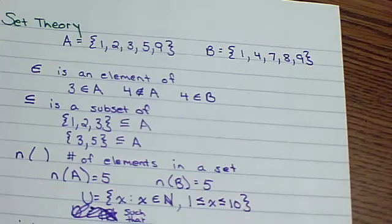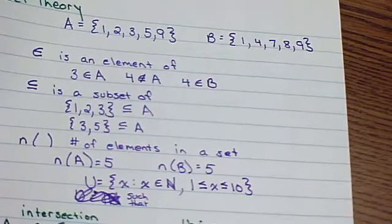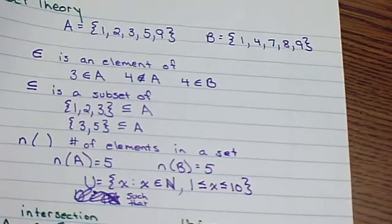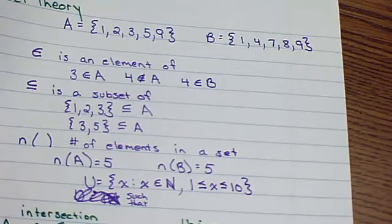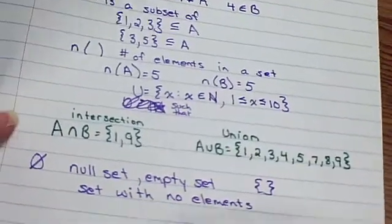That way, my universal set is, for this problem, is only going up to 10. So let's see if we can put these maybe in a Venn diagram and look at them a little bit closer. Sometimes that really does help make it more visual.